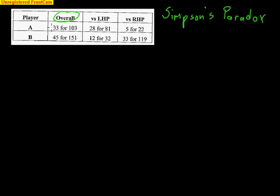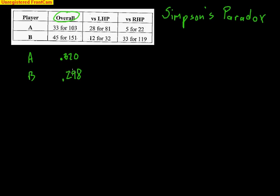Overall, Player A is 33 out of 103, which gives Player A a batting average of 0.320. Not too bad. Player B is 45 out of 151, and that is 0.298. So it seems pretty obvious that if you're trying to put the best hitter up there, it's best to go with Player A — clearly 22 points higher batting average.